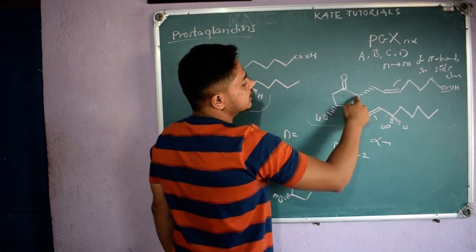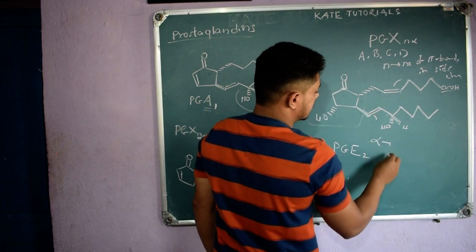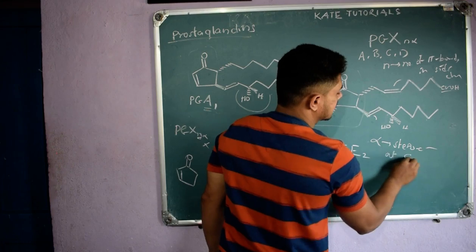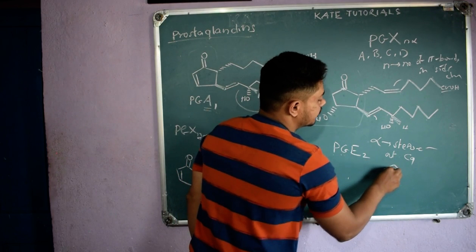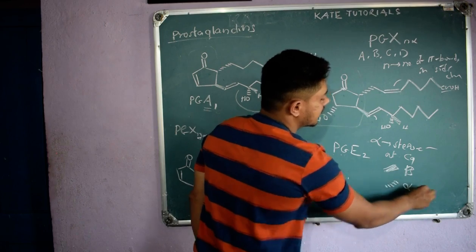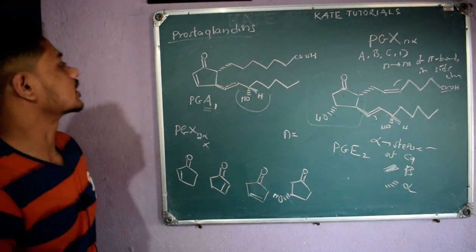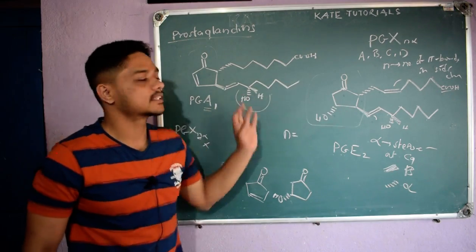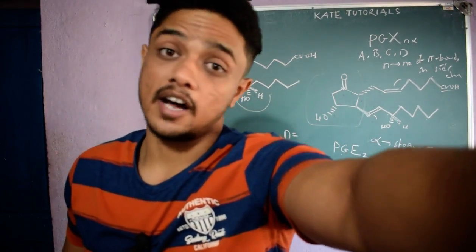At C9, if the group is above the plane it is beta; if below the plane it is alpha. This is the general formula, structure, and definition of prostaglandins. In the next class, I will give you a few structures for you to name, and if there is anything extra I will cover it then. Till then, take care and have a great day.